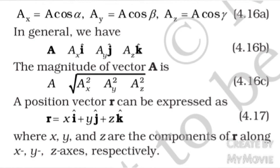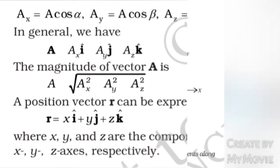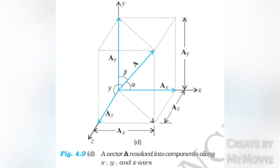A position vector R can be expressed as vector R equals x î plus y ĵ plus z k̂, where x, y and z are the components of vector R along the x, y and z-axes respectively. Figure 4.9D shows a vector A resolved into its components along the x, y and z-axes.